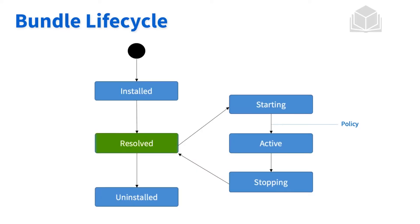Once the module gets a start signal, either programmatically or manually, it will then go to a transition state called starting, and then hit the active state. In the active state, everything is all systems go — the bundle should be doing everything it's supposed to do. If it's not, we're going to have to do a little bit of debugging or take a look at the logic of our code.